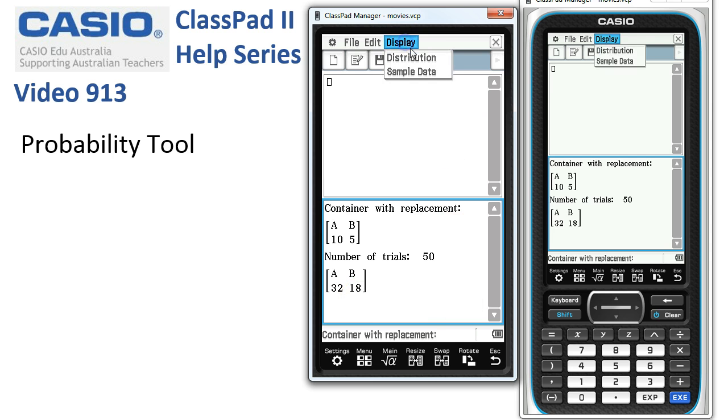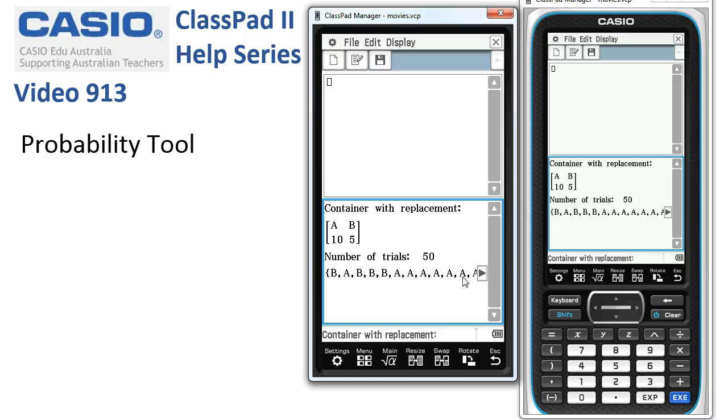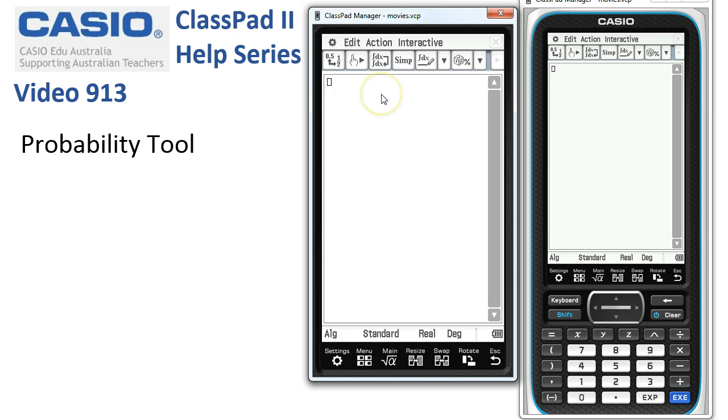And again, choosing display sample data, we can see the order in which the balls were actually thrown. So that's the probability tool. And when we're finished, tap the cross in the corner and we're back into main.